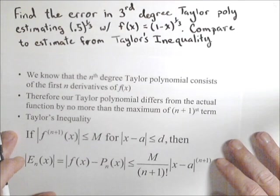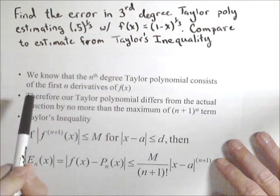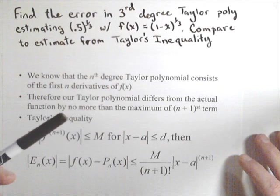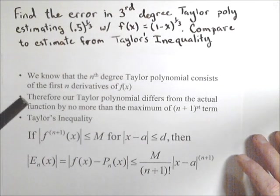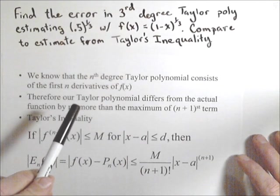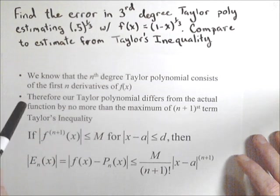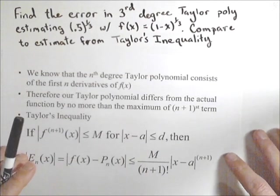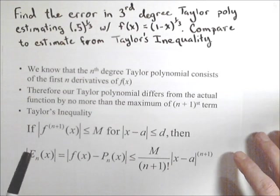Just a little bit about Taylor's inequality. We know that a Taylor polynomial consists of the first n derivatives of f(x), so it has information about the first n derivatives, so we would expect our Taylor polynomial to differ from the actual function by no more than the maximum of the (n+1)st derivative. That's the idea behind Taylor's inequality.